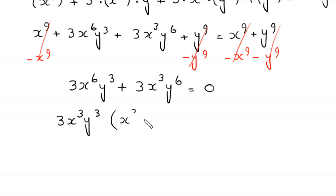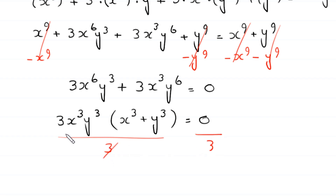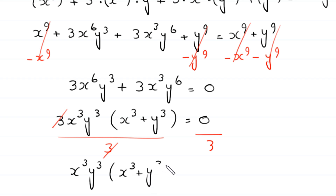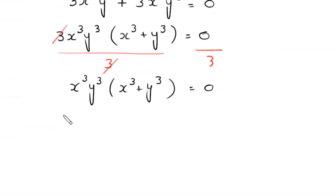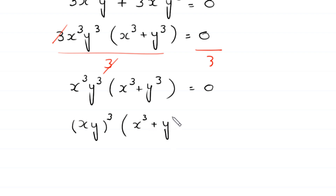Factoring out gives us 3x³y³(x³ + y³) = 0. We divide both sides by 3, so this becomes x³y³(x³ + y³) = 0. This x³y³ can be written as (xy)³, so we have (xy)³(x³ + y³) = 0.